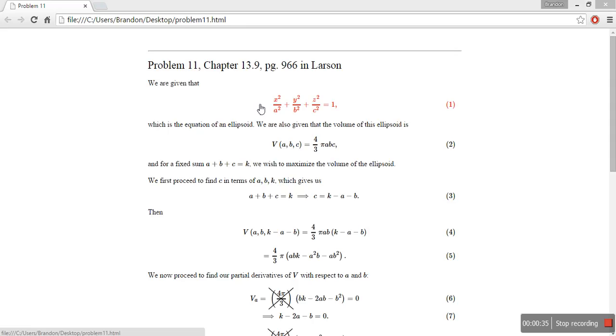In the problem they give us the implicit equation of an ellipsoid in terms of three variables, x, y, and z.